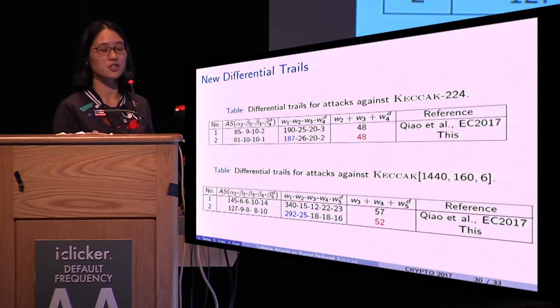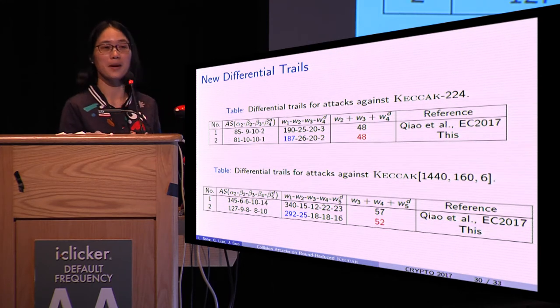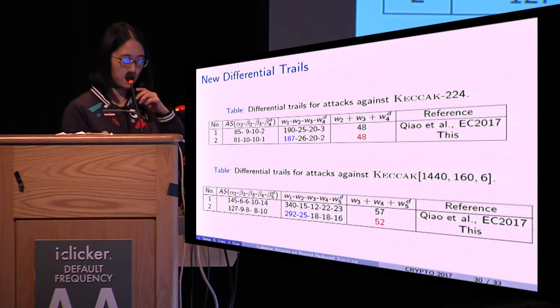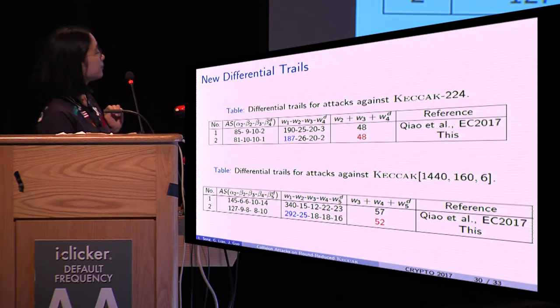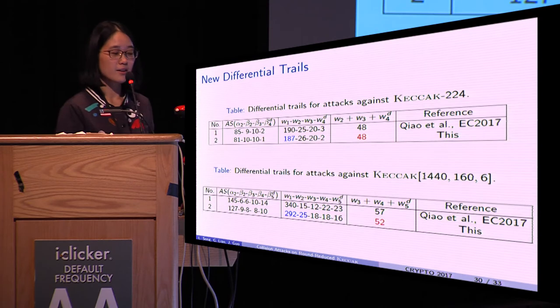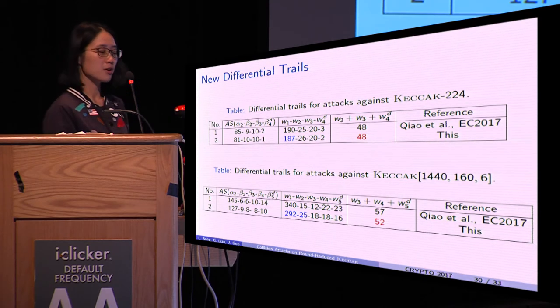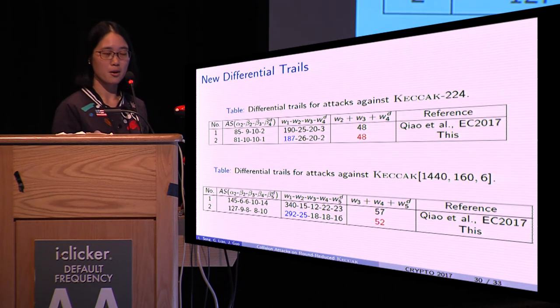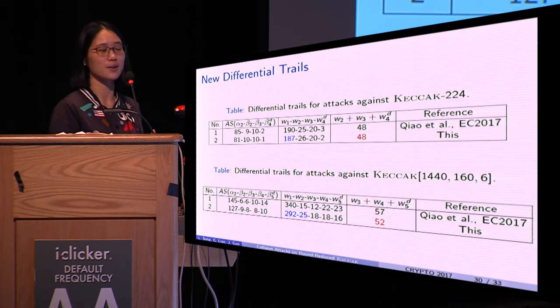With our GPU implementations, we find better differential trails as listed in this table. Here, the blue numbers affect the execution time of connectors, while the purple numbers determine the time complexity for the brute force searching stage.